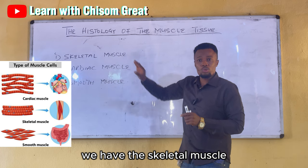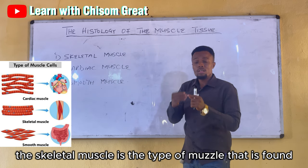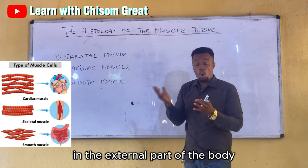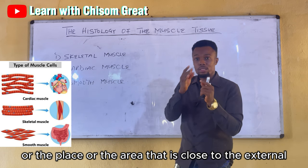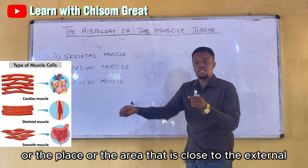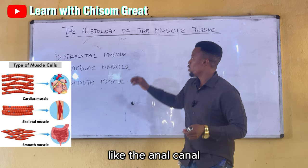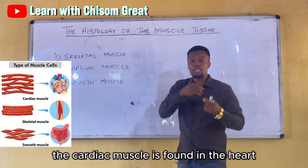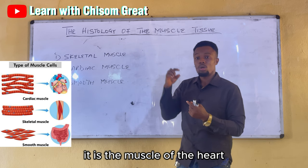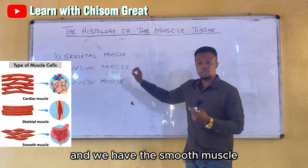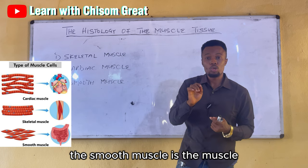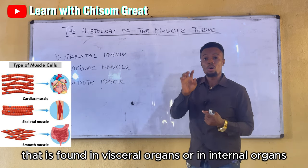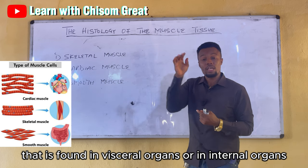We have the skeletal muscle, which is found in the external part of the body or the area close to the external, like the inner canal. We have the cardiac muscle, which is found in the heart — it is the muscle of the heart. And we have the smooth muscle, which is found in visceral organs or internal organs.